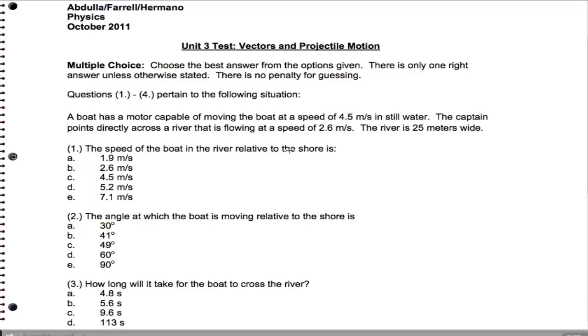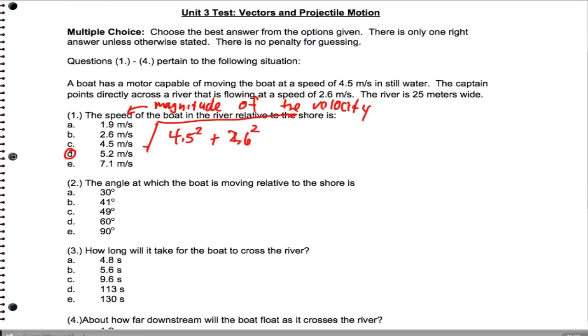First we want the total speed of the boat, and a word you will actually see for speed is magnitude of the velocity. So I think we're going to work on memorizing that word because we use it a lot this semester. To get the magnitude, we use Pythagorean Theorem. When we do that, we end up getting 5.2 meters per second, answer D.